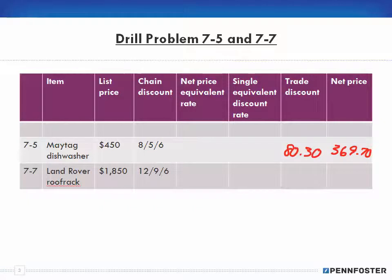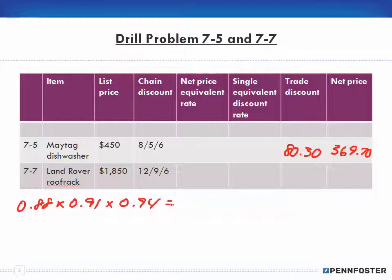For 7-7, the complement of 12% is 88%, so 0.88. Nine percent gives 0.91, and 6% gives 0.94. Multiplying those together, I end up with a net price equivalent rate of 0.752752.